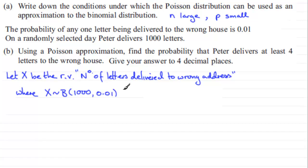What we've got to do, though, is use an approximation. Because what we want is to find the probability that Peter delivers at least four letters to the wrong house. In other words, we've got to find the probability that X is greater than or equal to four. And to do this, we're going to be doing one minus the probability that X is less than or equal to three.